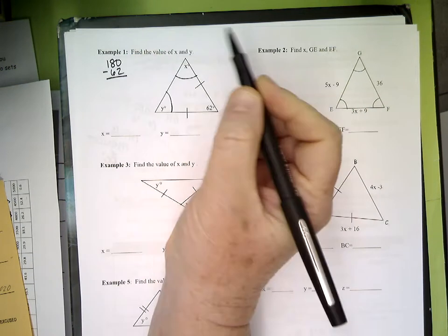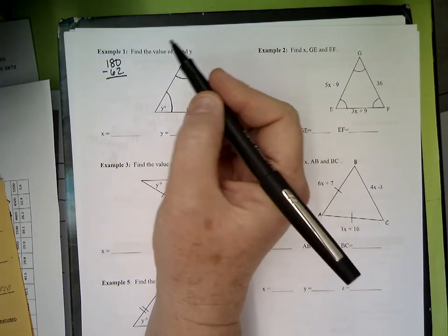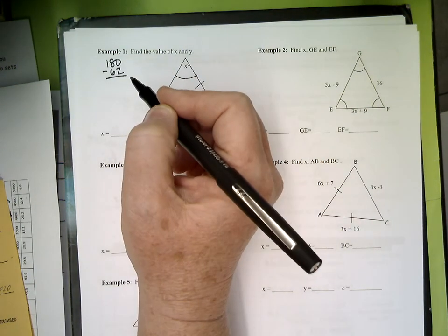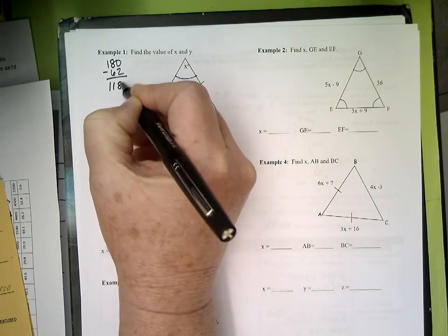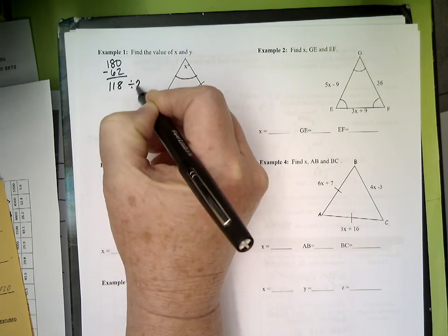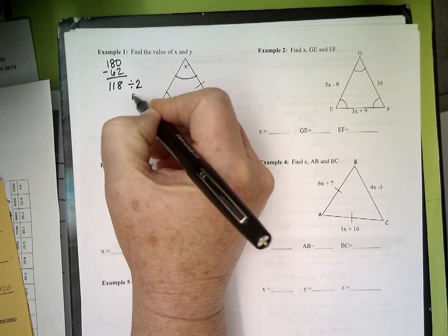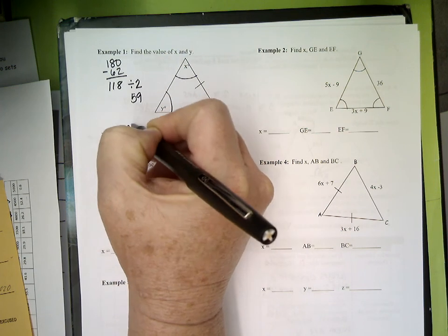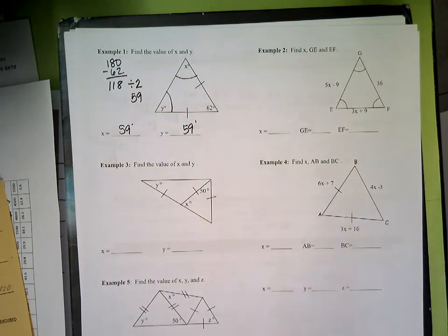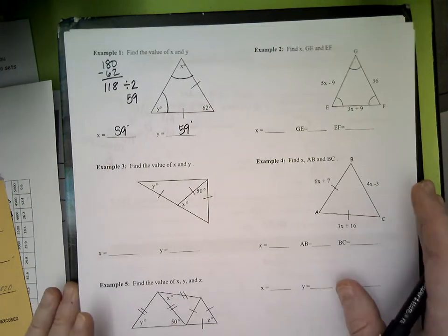180 minus 62 is, help me out here, is it 118? And then you have to take 118 and divide it by 2. 59, so each of those is 59 degrees. It's close to being an equilateral and equiangular, but it's not because you're not all the same.